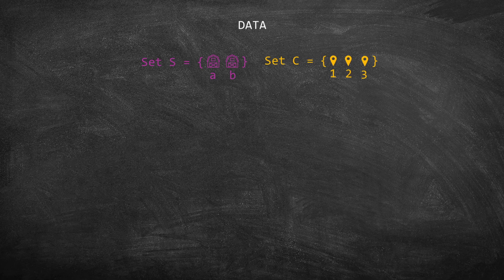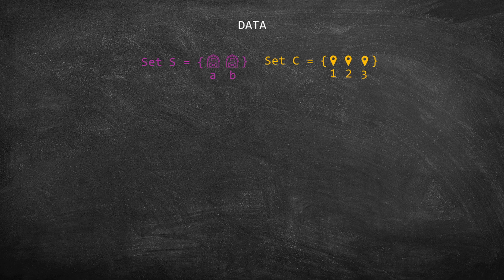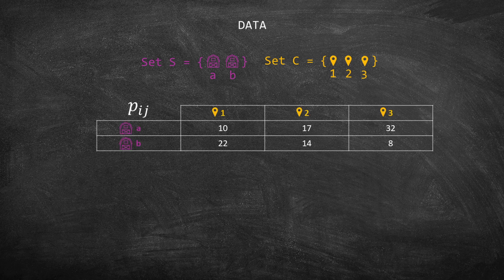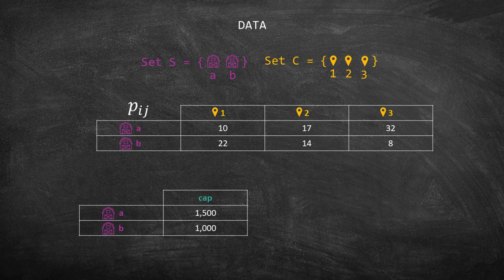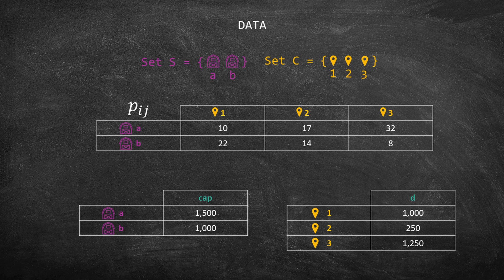Next, we are going to declare all the parameters that we have in the model. If we go back to the tables that we have created, you will notice that we have three parameters. First, we have parameter P, index i, j, which represents the costs. Second, we have parameter cap, index i, which represents the capacities of the suppliers. And we also have parameter d, index j, which is the demand of the customers.